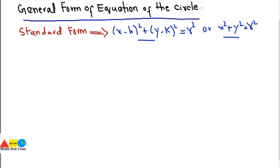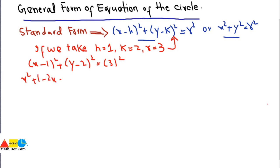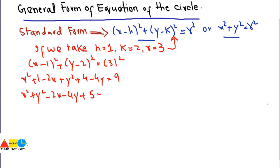But what if you came across equations like this? If we take h=1, k=2, and r=3 and put these values into the standard form, we get (x−1)² + (y−2)² = 3². Expanding, that gives x² + 1 − 2x + y² + 4 − 4y = 9, which rearranges to x² + y² − 2x − 4y + 5 = 9.